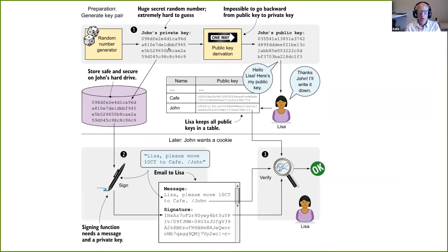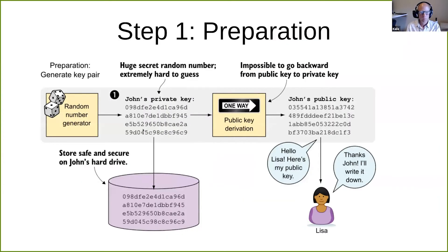John will create his key pair and give the public key to Lisa. Lisa will store this public key under John's name — John says 'Hi, I'm John, this is my public key.' Lisa stores this in a special table she created where she keeps track of everyone's public keys. The private key is created from a random number generator, and John stores the private key on his own hard drive so he can remember it for the future. Lisa now remembers his public key for the future.